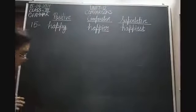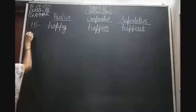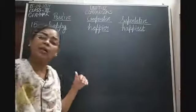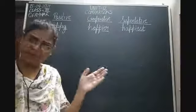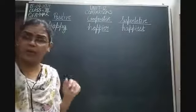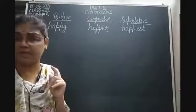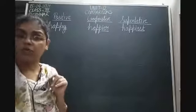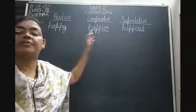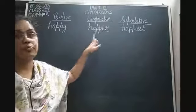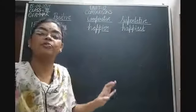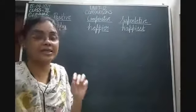To summarize the two rules so far: Rule 1 — for positive degree to comparative degree, add ER at the end; for superlative degree, add EST at the end. Rule 2 — for adjectives ending in Y, remove Y and add IER for comparative, and remove Y and add IEST for superlative.